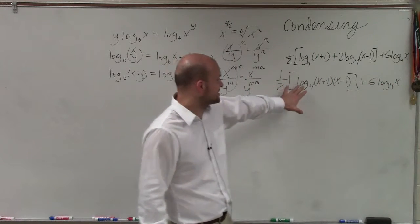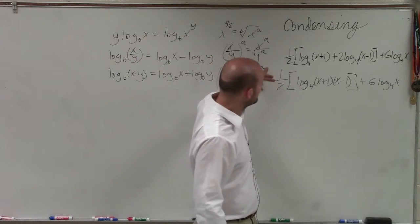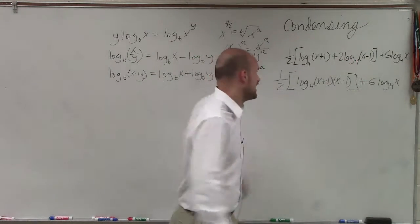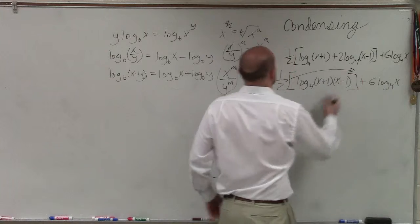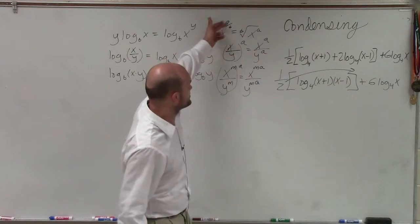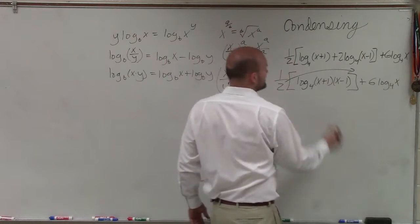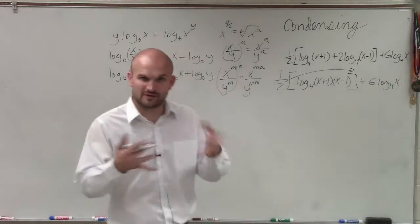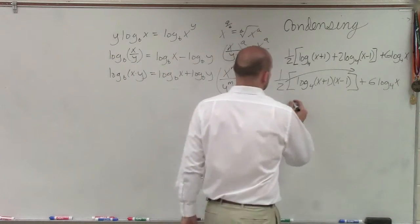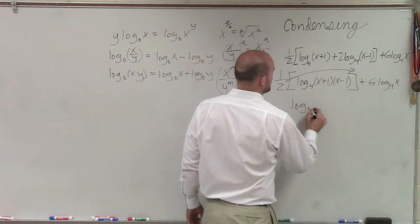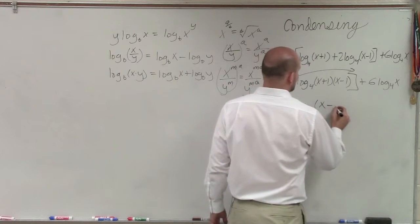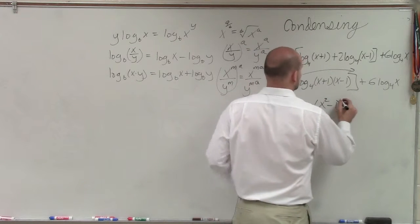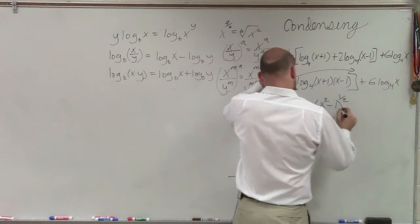Now, since this is written as a single logarithm, I can rewrite this now as my 1½ power can now go up as my exponent. And then I can rewrite my rational exponent as the root. Now, x plus 1 times x minus 1, that's a difference of two squares. Hopefully, factoring, you guys know that we can simplify this now into log base 4 of x squared minus 1, raised to the 1½ power.